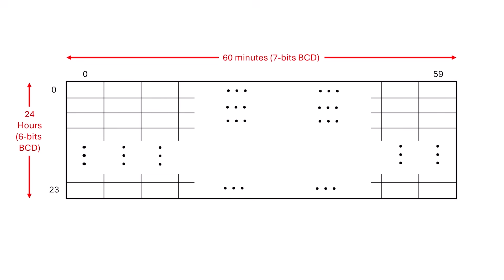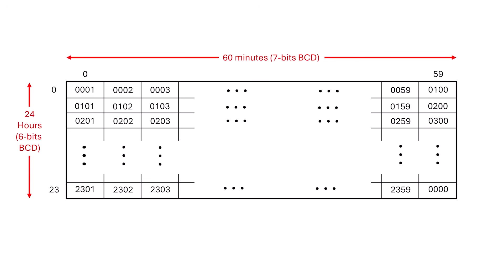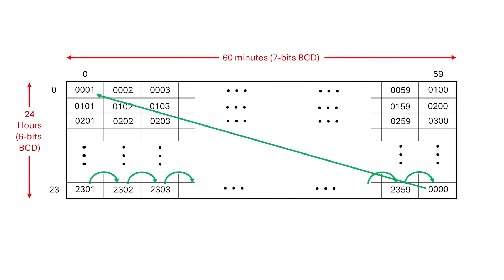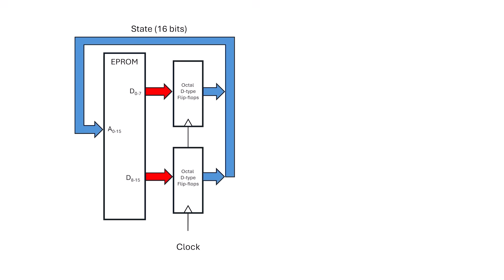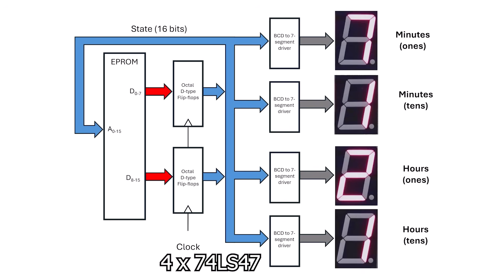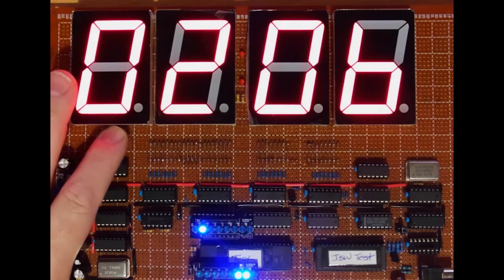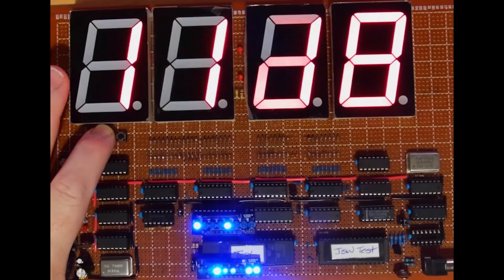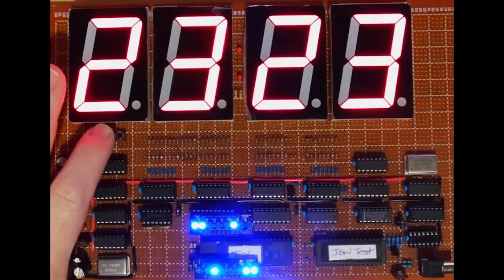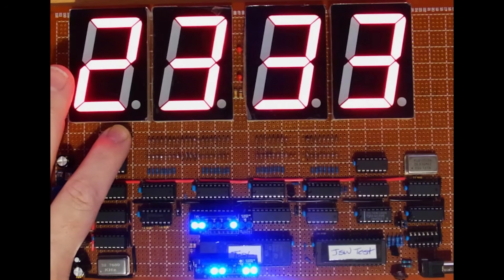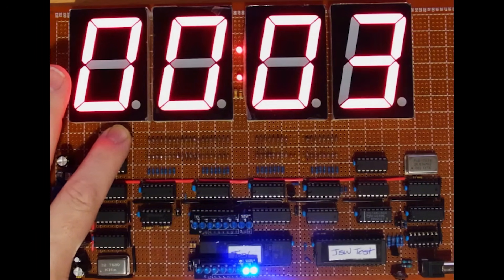Columns are minutes and rows are hours. A tiny program pre-computes the next minute from the current one, wrapping minutes around at 59 to 0, and hours wrap around from 23 to 0 at the end of the day. Hook up a few 7-segment displays, and voila — a working clock. You can watch the left two digits count from 0 to 59 then reset, and the right two digits count from 0 to 23, then reset.